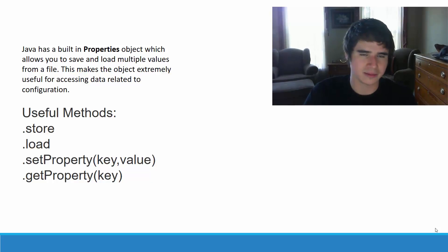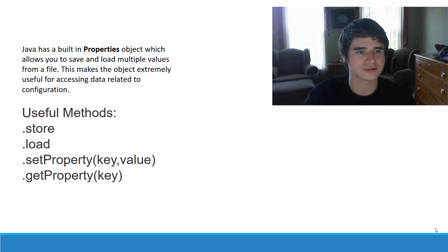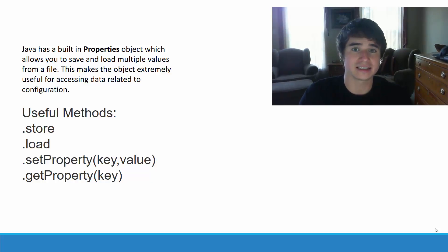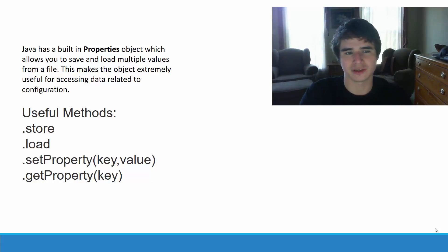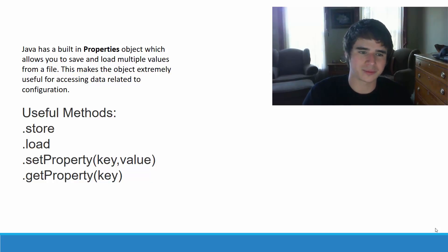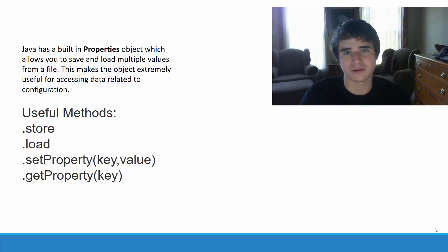Some useful methods that the Properties class has are the store and load methods, which we will use to store and load the properties from the file system. It also has the setProperty and getProperty methods. The setProperty method takes a key — the name of the configuration option — and a string value. For example, a key of 'username' would store the user's username. When the program runs again, getProperty with the key 'username' retrieves that value.